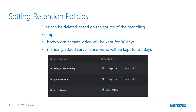The length of time evidence can be kept can also be based on the device type that is associated with the recordings. For example, body-worn camera video could be kept for 90 days, whereas public surveillance video could be kept for 30 days.